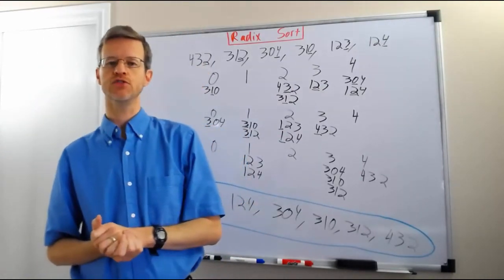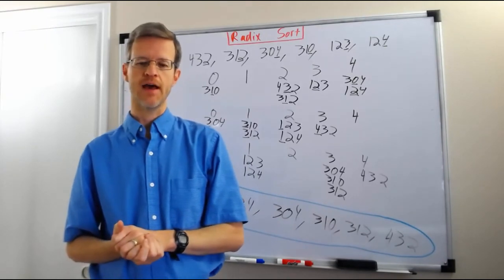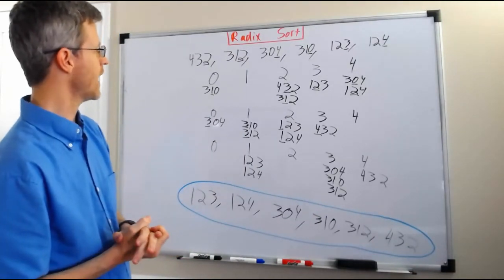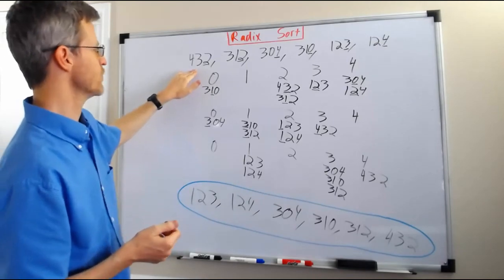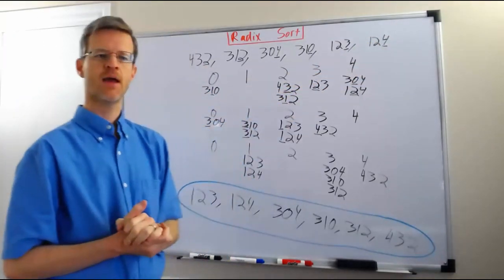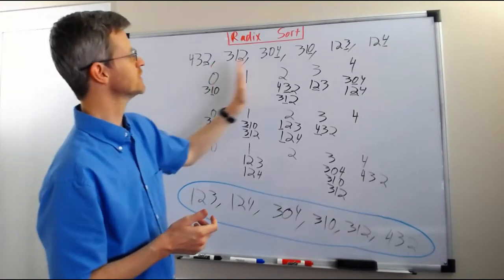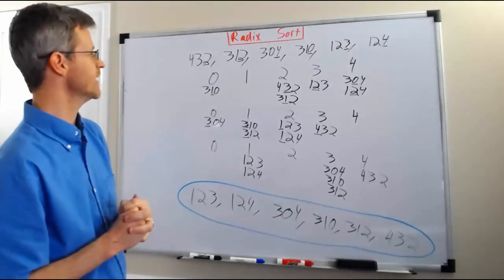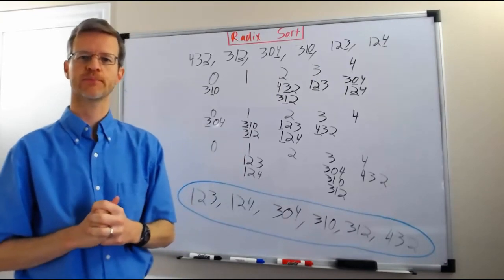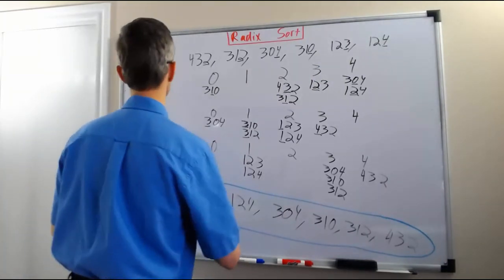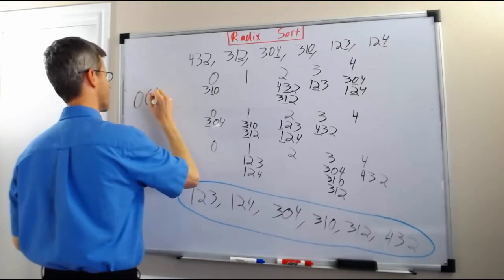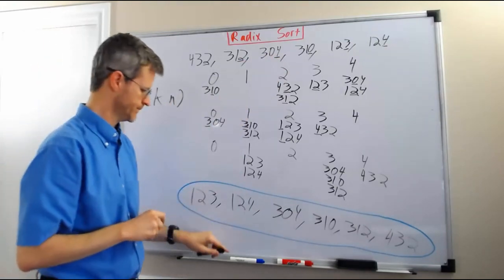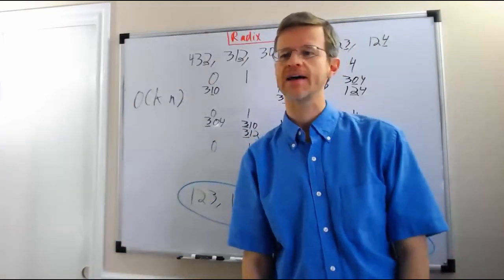That is how you do radix sort. One very interesting property of radix sort is that the runtime is proportional to the size of the numbers as well as the number of numbers. Strictly speaking, it is linear in the number of numbers given as input, and also linear in another factor — the length of the numbers. So we can write the runtime as O(K·N), where K is the number of digits in the numbers and N is the number of numbers. And that is radix sort.